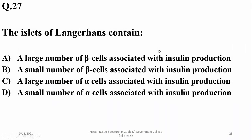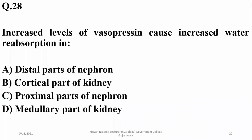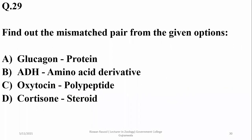The islets of Langerhans contain a large number of beta cells associated with insulin production, so A is the right option. Increased levels of vasopressin or ADH cause increased water absorption in the distal parts of the nephron in the kidneys — so A. Find the mismatched pair: ADH is not an amino acid derivative but a polypeptide hormone having 9 amino acids. Glucagon is a protein, oxytocin is a polypeptide with 9 amino acids, and cortisone is a steroid. So the right option is B.